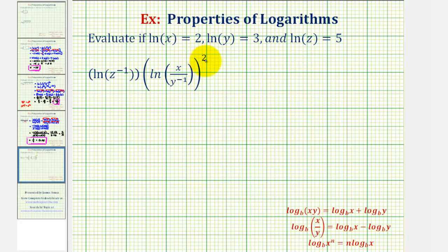So we'll have to expand the logarithm inside and then end up squaring the result. But looking at the first natural log, we can apply the power property of logarithms because we have z raised to the power of negative one. So we can rewrite this first logarithm as negative one times natural log z.